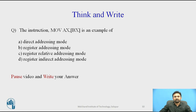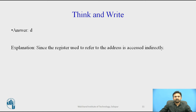Here is a question: The instruction MOV AX, [BX] is an example of which addressing mode? The options are: (a) direct addressing mode, (b) register addressing mode, (c) register relative addressing mode, (d) register indirect addressing mode. Take a pause and write your answer. The answer is d — register indirect addressing mode — since the register used to refer to the address is accessed indirectly.